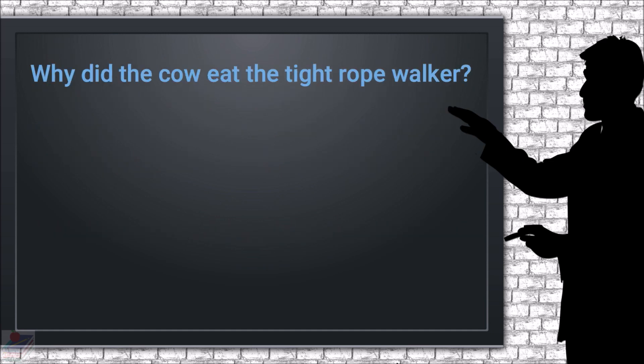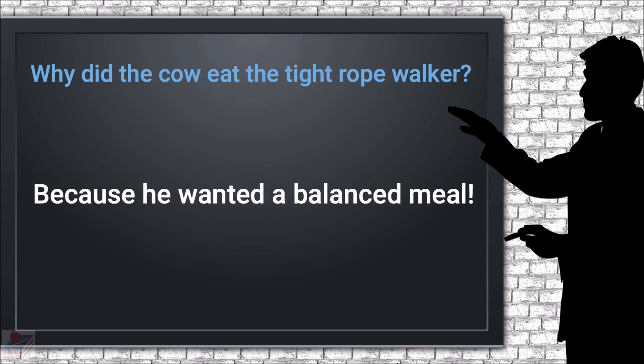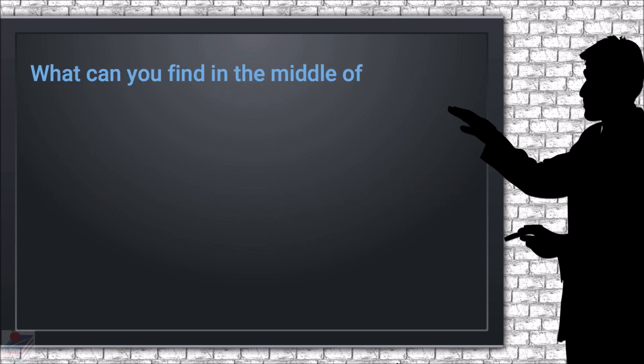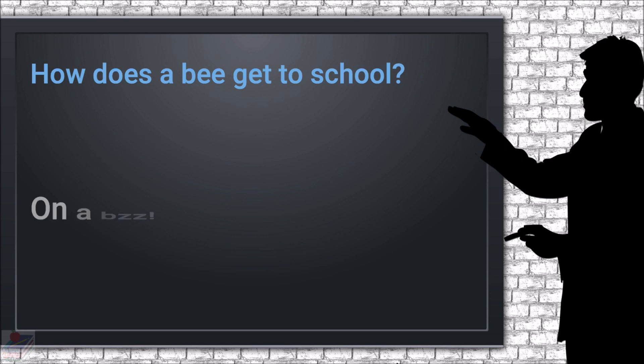Why did the cow eat the tightrope walker? Because he wanted a balanced meal. What can you find in the middle of a tornado? The letter N. How does a bee get to school? On a buzz.